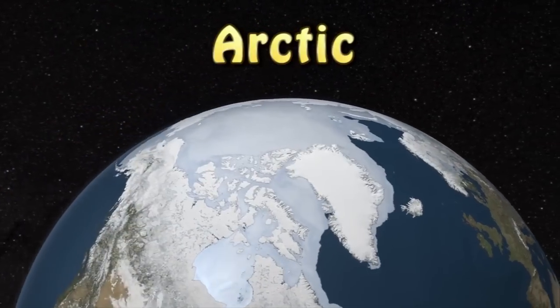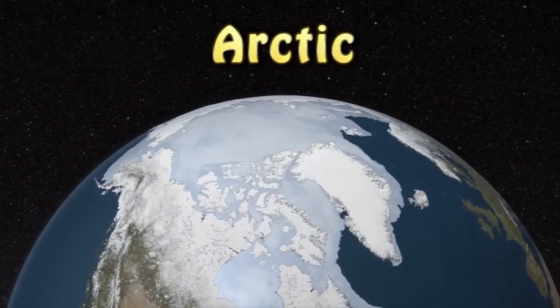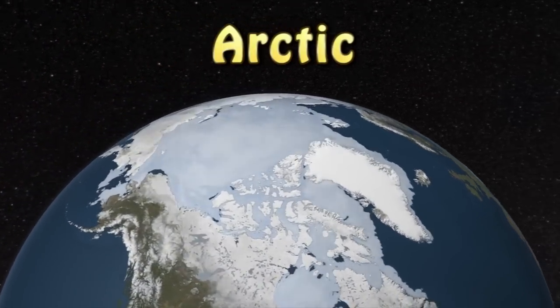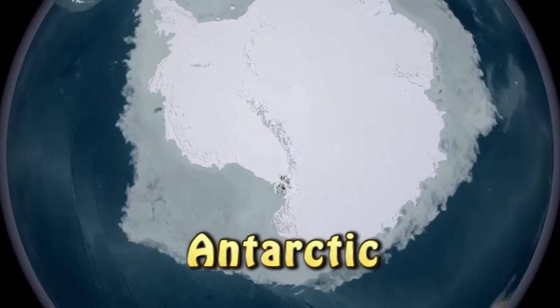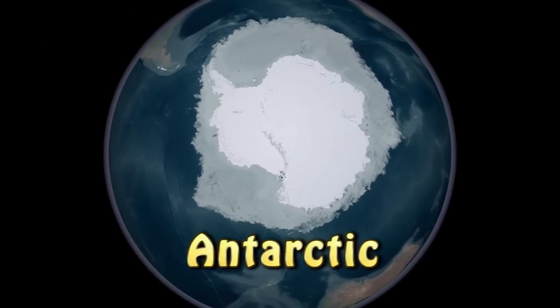A big difference between the Arctic in the North and the Antarctic in the South is that the Arctic, the North Pole, is ocean which is surrounded by land, the United States, Canada, Russia, whereas the South Pole is land surrounded by ocean.